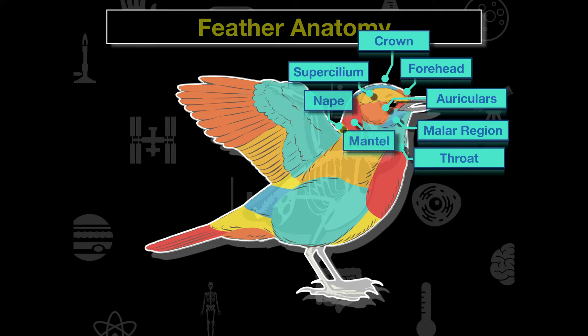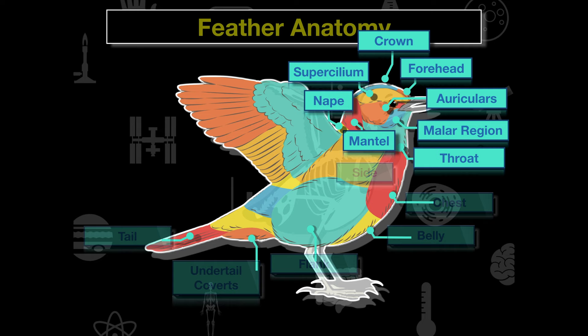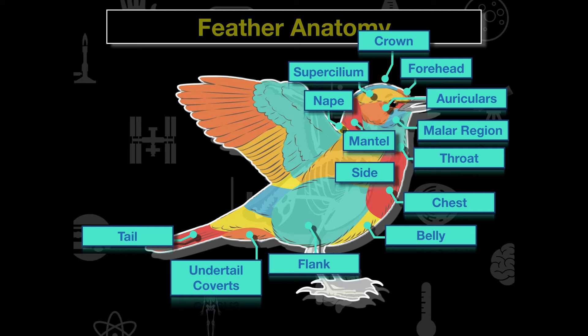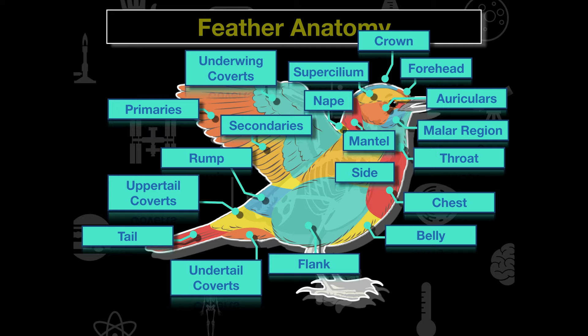On the back of the neck we see the nape and mantle. On the right side of the bird we have the chest, belly, flank, undertail coverts, and tail. Each set of feathers allows us to distinguish different species. Moving up to the wings, we see the uppertail coverts, rump, secondaries, primaries, and underwing.